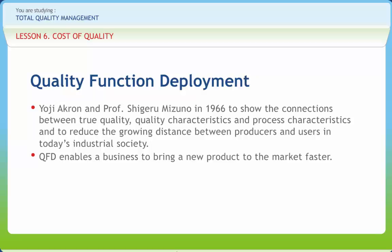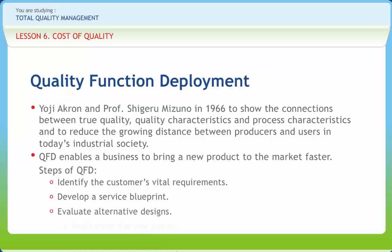Quality function development consists of four main steps. First, identify the customer's vital requirements for the product or service and translate them into design requirements. Develop a service blueprint of an elegant, effective, and efficient delivery process. Evaluate alternative designs and implement the newly designed process for delivery of the product or service.